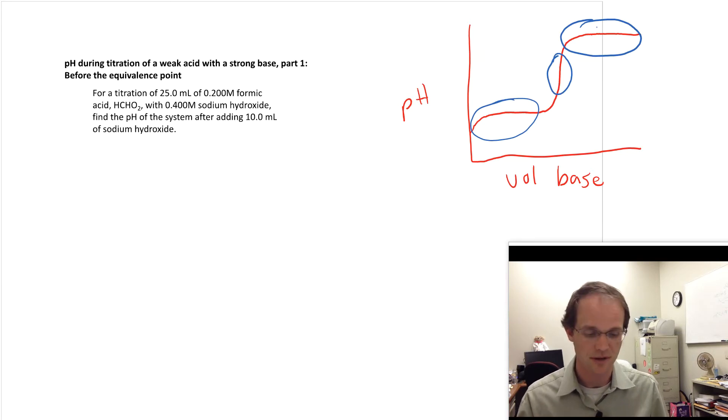In a previous problem, we solved the pH at the initial before we started the titration, and that was just a weak acid problem. And so today we're going to be solving it when we've added 10 milliliters. The first thing we need to know is what's the equivalence point. So the equivalence point, most people think about it, is when the acid is equal to the base. And that's not quite correct, because for diprotic and triprotic acids, or dibasic and tribasic ones, it's not going to be one-to-one ratios. There's going to be some stoichiometry involved.